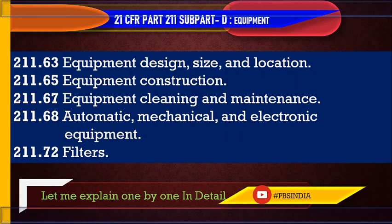Subpart D has a few sub-guidelines. 211.63 covers equipment design, size, and location — how to design equipment intended to produce a pharmaceutical product, and what size and location to place it. 211.65 covers equipment construction — the suitability, make, and how to construct the equipment.